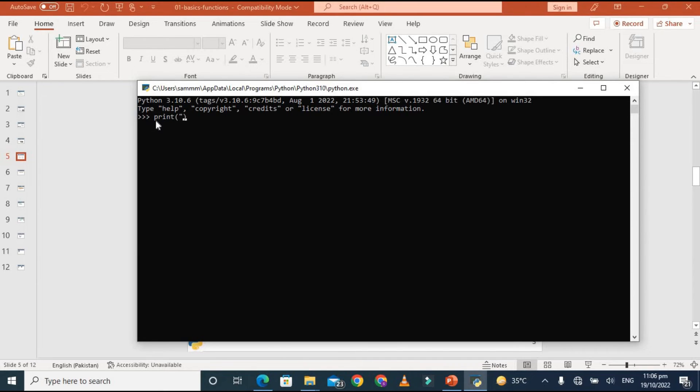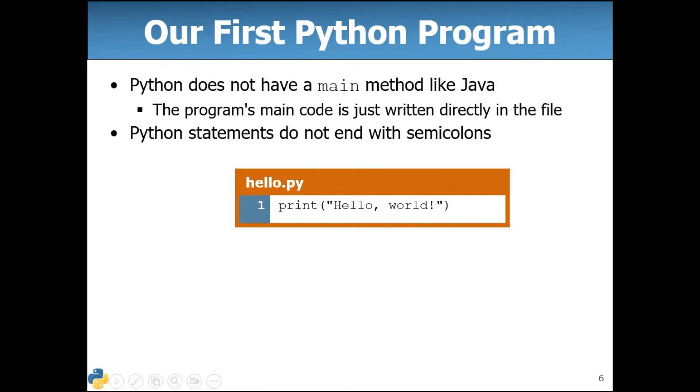So let me show you, like if I'm typing here print and then smart programmer, we are getting the immediate result which is smart programmer. Let's do another example, let's do an arithmetic expression like one plus four equals five. So you can type a single line of code in Python shell and get the immediate result.